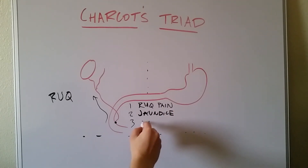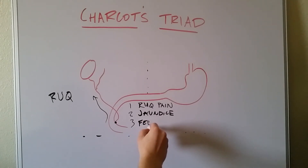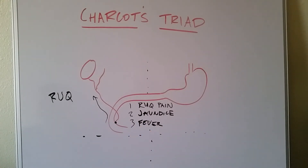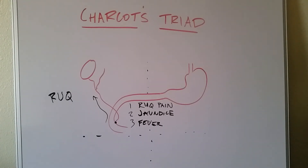And the third part is just going to be your run-of-the-mill fever. Each of these things by themselves don't necessarily clue you into a particular diagnosis, but when you see all three of them together, that's when we start talking about the classic case of Charcot's Triad and ascending cholangitis. Because those three things occurring together make you definitely think gallbladder, and you have to rule out an infection subsequent to a gallstone or some sort of bile stricture or bile stasis.